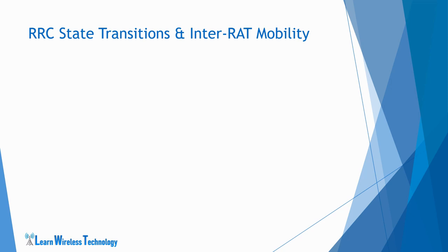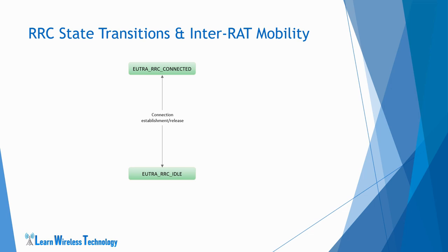Now let's see the RRC state transitions and interworking of LTE with legacy radio access technologies. These are the two RRC states of LTE or EUTRA: RRC connected state and RRC idle state. For a UE to transit from RRC idle to RRC connected state, the UE performs RRC connection establishment procedure. For transiting from RRC connected state to RRC idle state, the UE performs RRC connection release procedure.